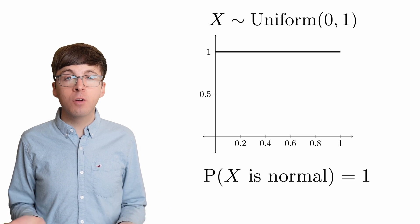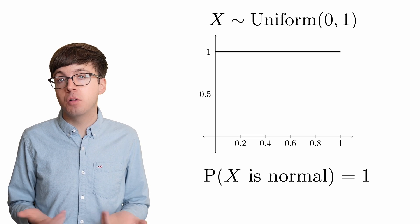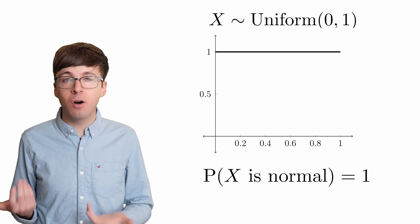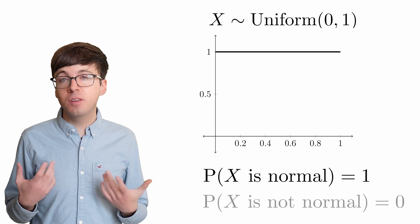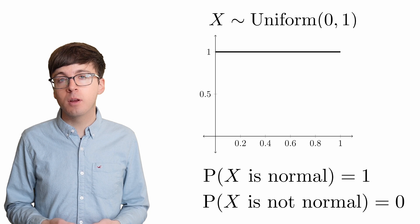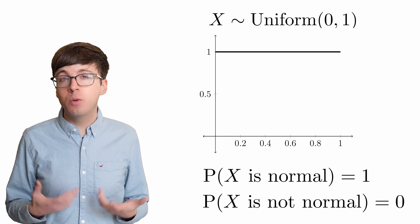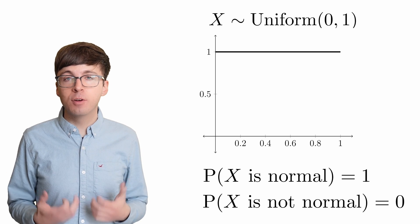Even though there are non-normal numbers between 0 and 1, like all of the rationals, there are so few of those compared to all of the real numbers that there's a 0% chance of ever picking one. We could keep picking these uniform random numbers over and over forever, and we would pick a normal number every single time.